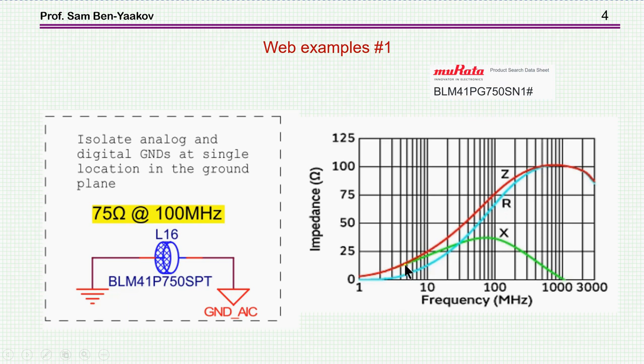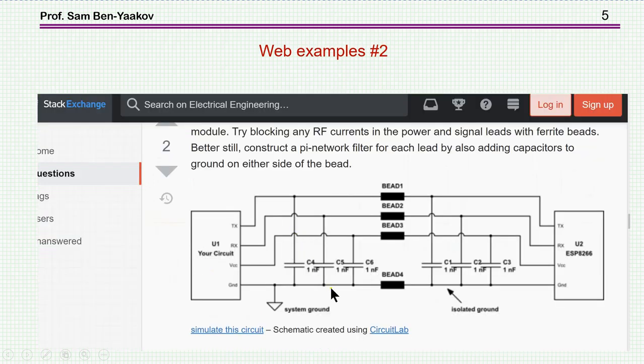So the question is then, is this a good idea to put a bead here between these two grounds, as suggested here? Isolate ground, analog and digital ground at a single location in the ground plane by this bead.